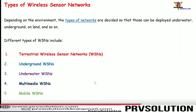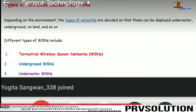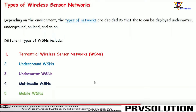What are the different types of wireless sensor networks? Depending on the requirement and the type of work we want to do, we can design different wireless sensor networks. The types of network are decided depending on the environment.